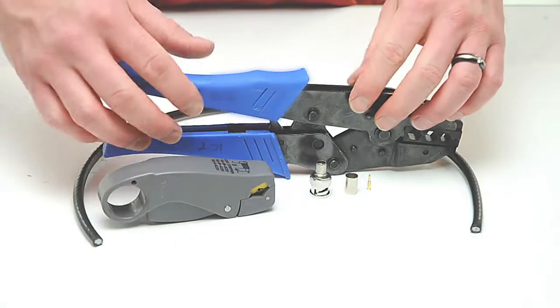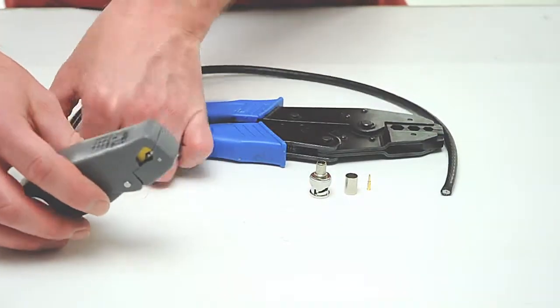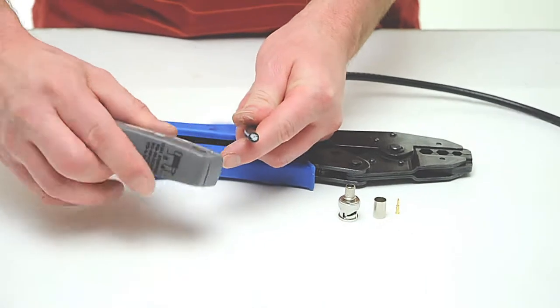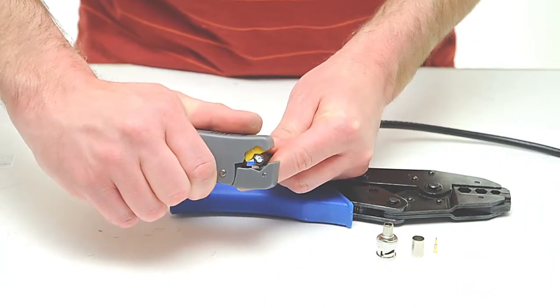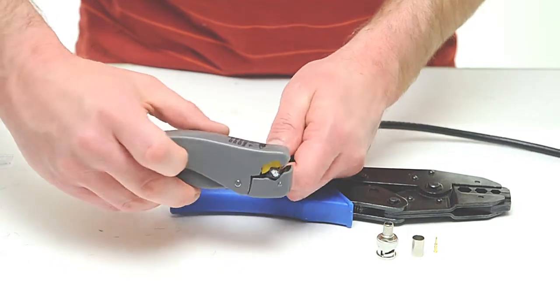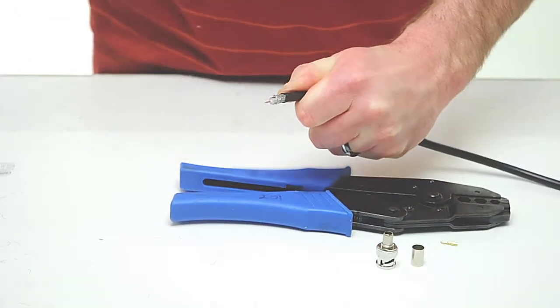To begin, take your coax stripper and remove the outer jacket and dielectric of the cable. The advantage of using a coax stripping tool is that it cuts both the outer jacket and dielectric at the same time. Rotate the tool a few times around the outside of the cable and peel the jacket off.